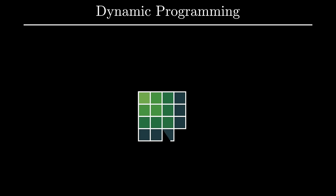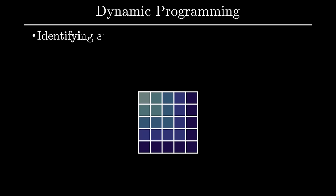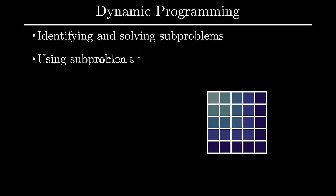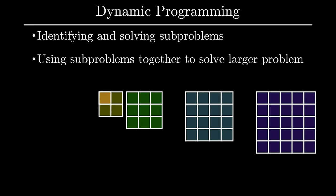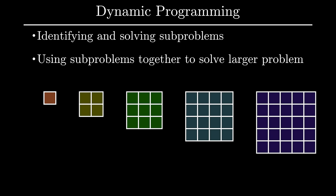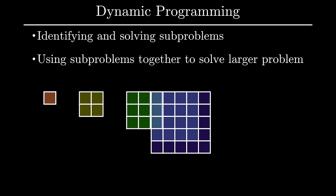Dynamic programming is one of the most powerful algorithmic techniques in computer science. The basic premise centers around the idea of solving a problem by first identifying and solving subproblems, and then bringing these subproblems together in some manner to solve the larger problem. Not surprisingly, this process is easier said than done.